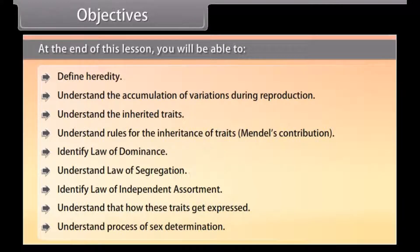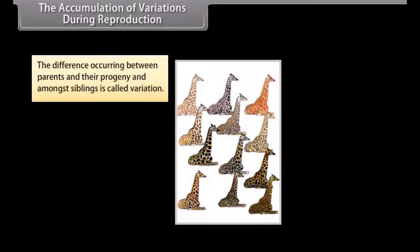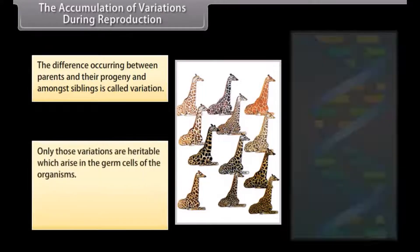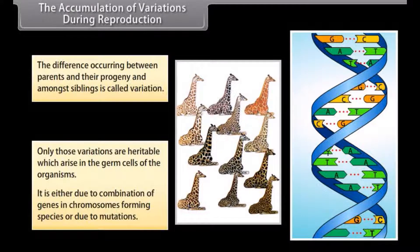The accumulation of variations during reproduction: The difference occurring between parents and their progeny and amongst siblings is called a variation. Only those variations are heritable which arise in the germ cells of the organisms. It is either due to combination of genes in chromosomes forming species or due to mutations.